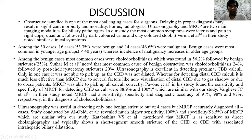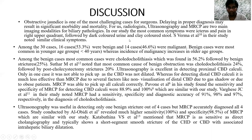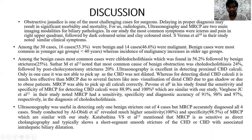Discussion: obstructive jaundice is one of the most challenging cases for surgeons. Delay in proper diagnosis may result in significant morbidity and mortality. For radiologists, USG and MRCP are two main imaging modalities for biliary pathologies. In our study, the most common symptoms were icterus and pain in the right upper quadrant, followed by dark-colored urine and clay-colored stool. Case Varma et al. in their study also noted similar clinical symptoms. Among the 30 cases, 16 were benign and 14 were malignant. Benign cases were most common in younger age groups under 40 years, whereas incidence of malignancy increases in older age groups.